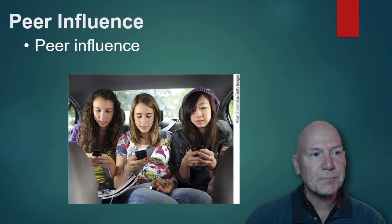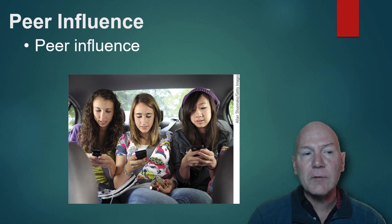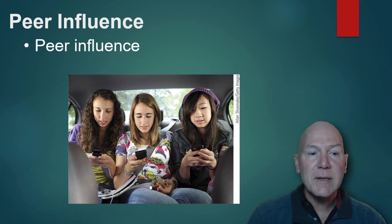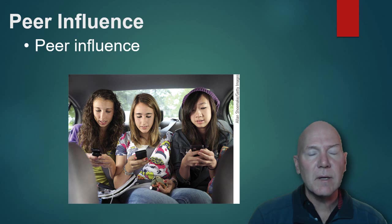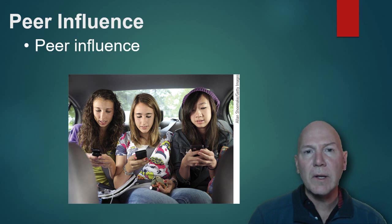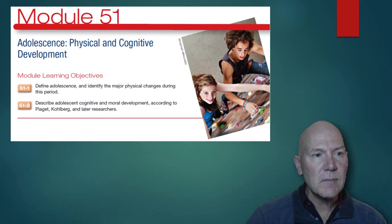Peer influence is big. When you're a little kid, if you don't like a certain food, you're more likely to eat it if it's placed in front of kids who enjoy it. Peers influence the clothing you wear and the activities you take part in. Parents, on the other hand, tend to influence the bigger ticket items — your values, your feelings about education, your morality — whereas friends influence more of the smaller day-to-day things, which are also important.